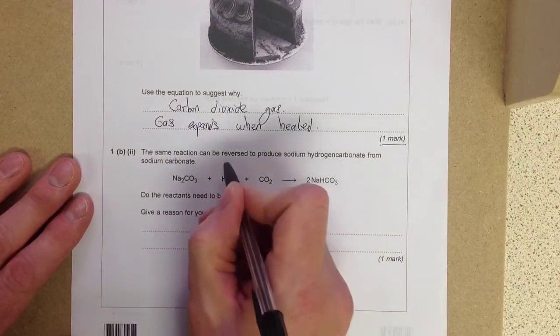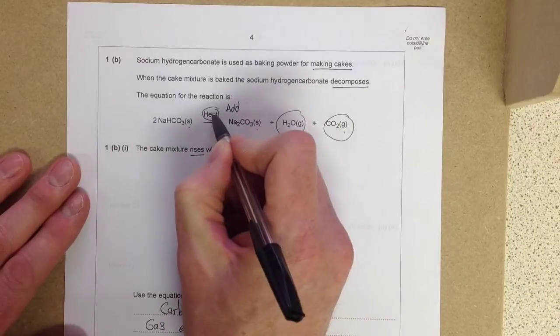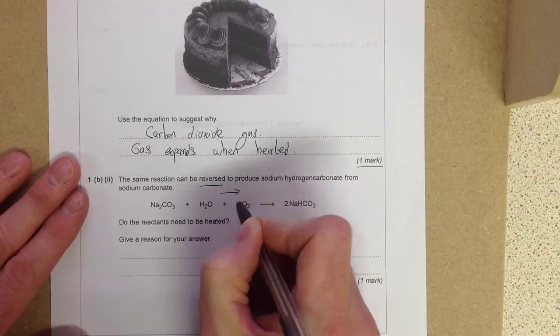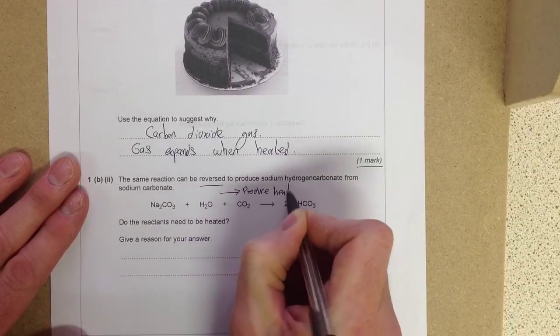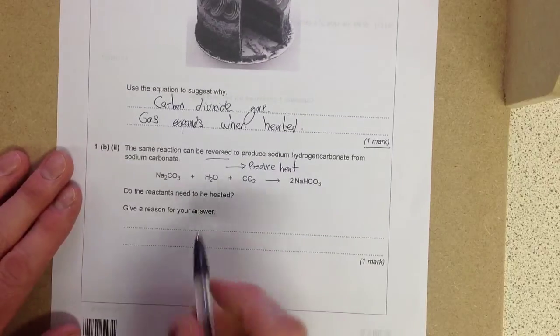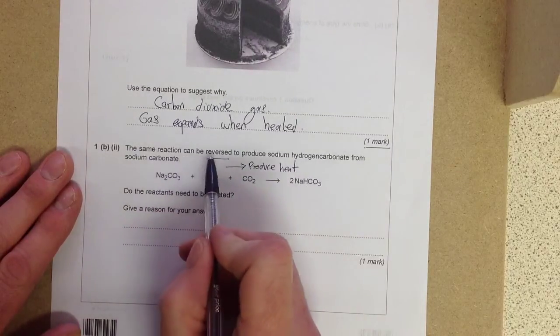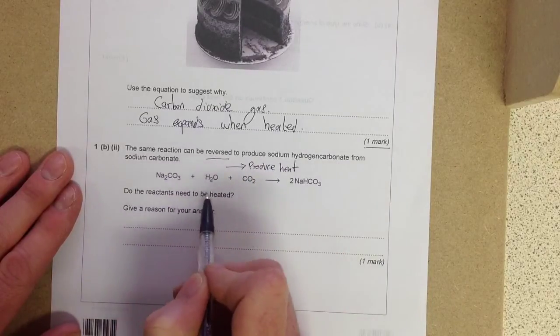The next little bit, the same reaction can be reversed. Hey, wait a minute. If you have to add heat to make it go in this direction, if you reverse it, therefore it must produce heat. So let's have a look at the reaction. The same reaction can be reversed to produce sodium hydrogen carbonate from sodium carbonate.